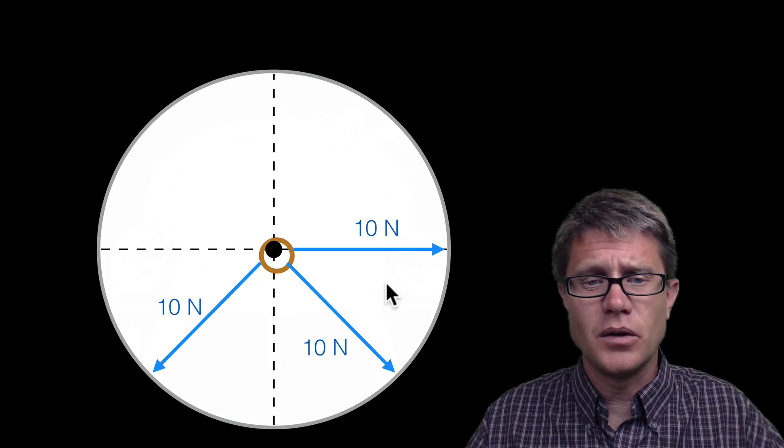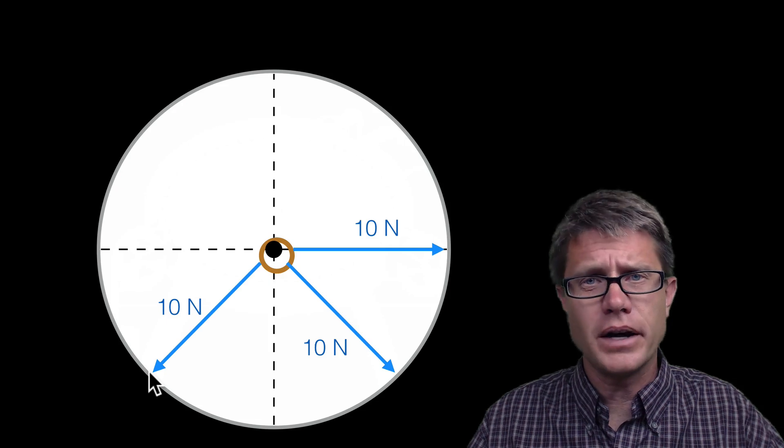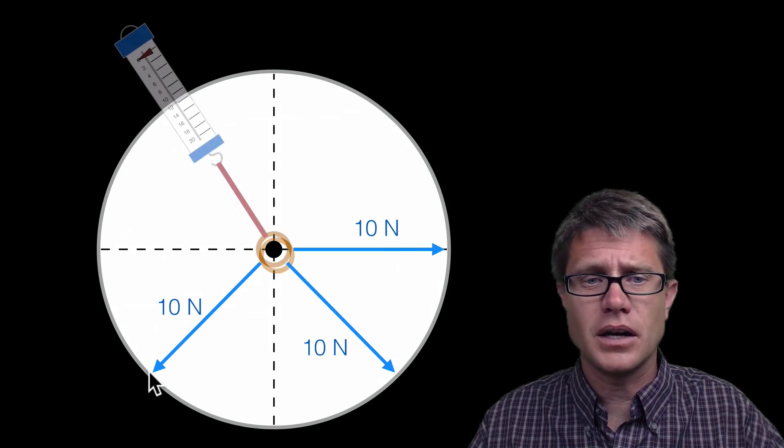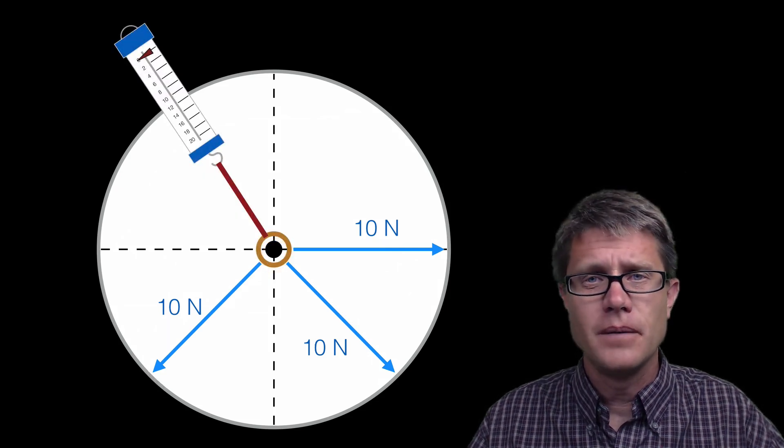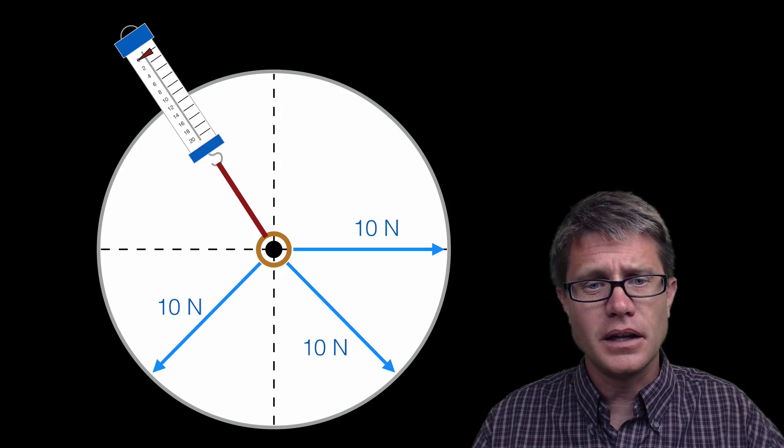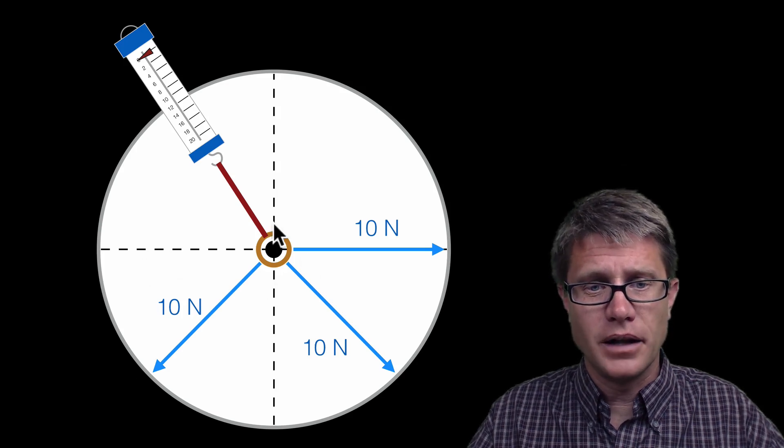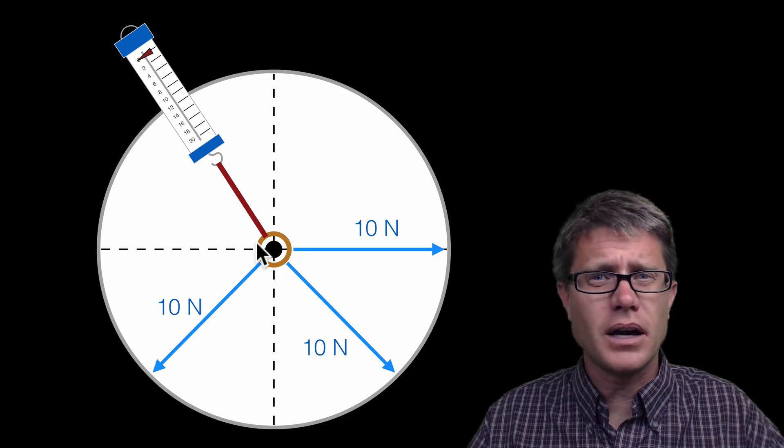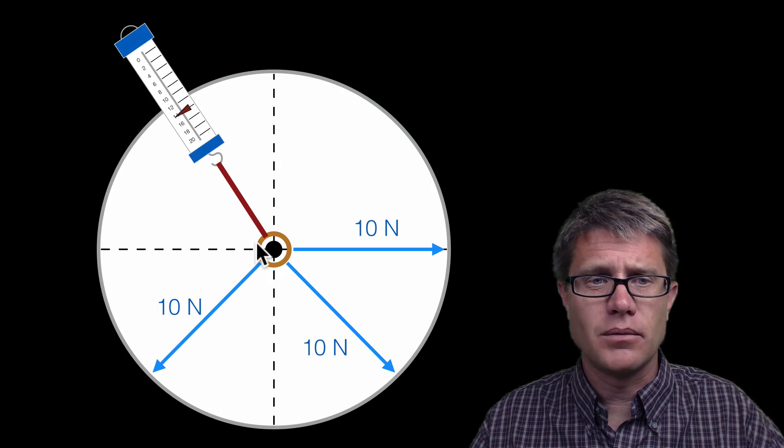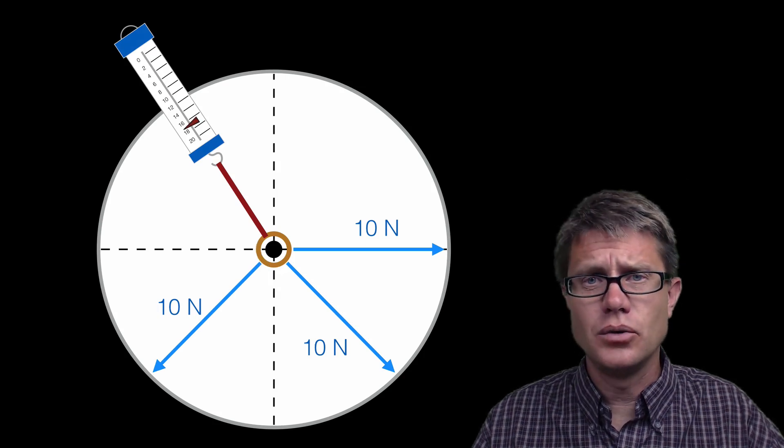Well you can just play around with it using a force table. In other words I can attach a force meter on this side and I can simply pull it until I get that ring right in the middle balanced around that peg. And so what kind of a force do we have? It ends up being right around 17 Newton force.